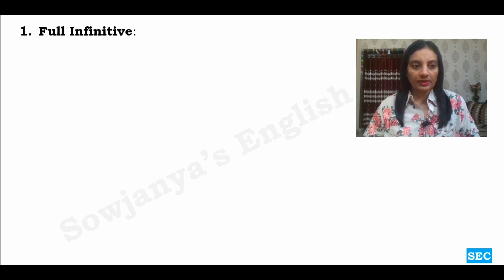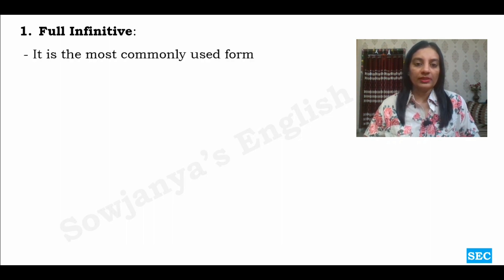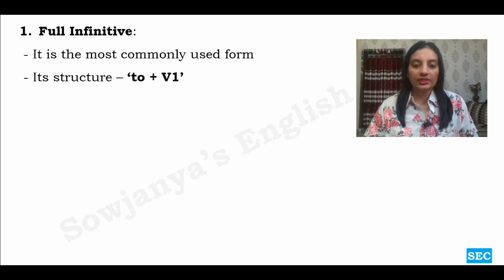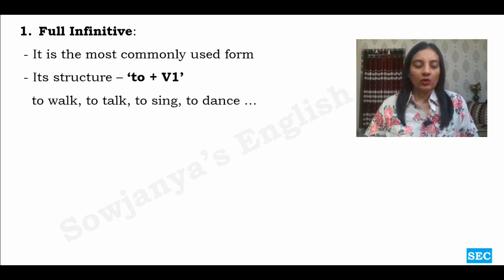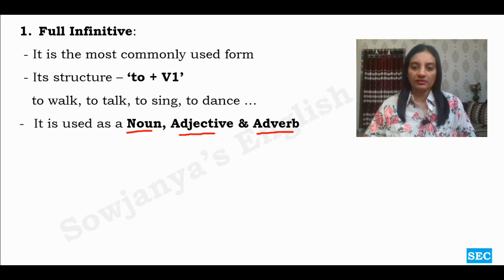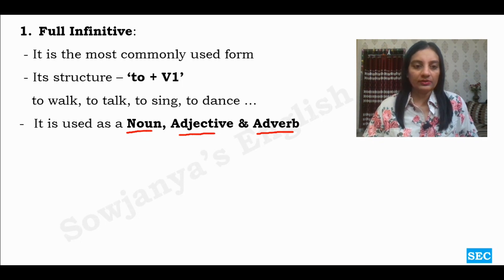The first one is full infinitive. It is the most commonly used form of infinitive. Its structure is 'to + V1'. We have learnt about it in our previous classes. For example: to walk, to talk, to sing, to dance. It is used as a noun, an adjective, and an adverb in the sentence.